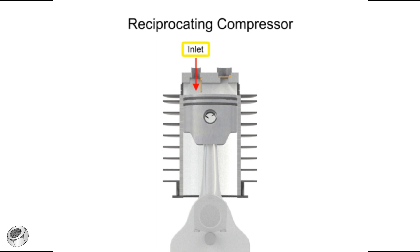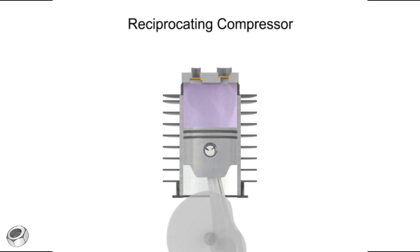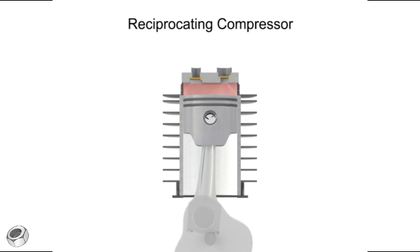The inlet, sometimes called the suction valve, allows atmospheric air to enter the cylinder. The outlet, sometimes called the discharge valve, ejects the newly compressed air from the cylinder. As the crankshaft turns, the piston lowers and raises, changing the available volume within the cylinder.